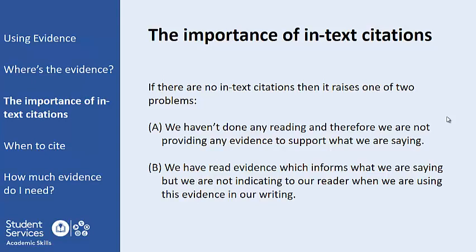Or problem B: we have researched our topic and found relevant sources, but since there are no citations in our paragraph, we are not indicating to a reader which information belongs to other writers. This is a major problem too, because it means that we may be open to accusations of plagiarism — which is when we use the words or ideas of other writers within our work without telling our readers that we are doing so.